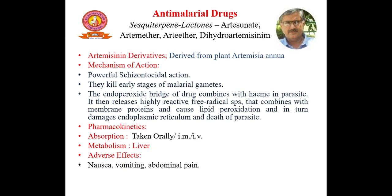Then we have the sesquiterpene lactones: artesunate, artemether, arteether, and dihydroartemisinin. These are artemisinin derivatives derived from the plant Artemisia annua. Mechanism of action: these drugs have powerful schizontocidal action and kill early stages of malarial gametes. The endoperoxide bridge of the drug combines with heme in the parasite, releasing highly reactive free radical species that combine with membrane proteins, causing lipid peroxidation, and in turn damaging the endoplasmic reticulum and causing death of the parasite. These drugs are taken orally or parenterally (intramuscularly or intravenously), metabolized in liver. Adverse effects are nausea, vomiting, and abdominal pain.